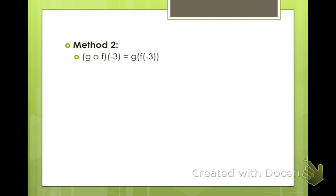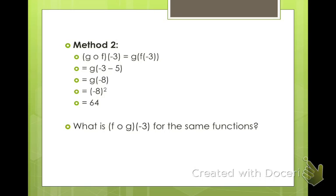Method 2 says: just plug the number directly into f first. f of x is x minus 5, so f of negative 3 is negative 3 minus 5, which is negative 8. Then we plug that result into g: g of negative 8 is negative 8 squared, which is 64. Both methods give you the same answer. Sometimes one will be easier than the other depending on how complicated the functions are.